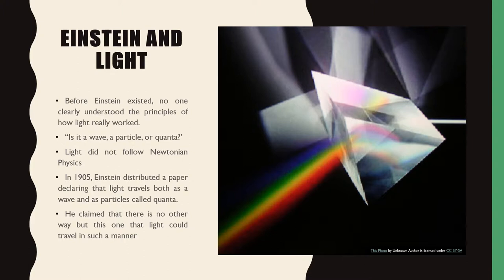Albert Einstein and his obsession with light. Before Einstein, no one clearly understood the principles of how light really worked. Is it a wave, a particle, or a quantum? Light did not follow Newtonian physics. In 1905, Einstein distributed a paper declaring that light travels both as a wave and as particles called quanta, and claimed there is no other way that light could travel in such a manner.